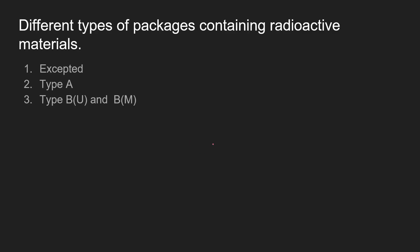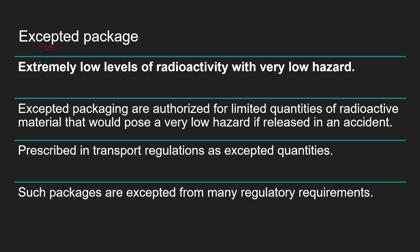There are different types of packages for radioactive materials: excepted packages, Type A packages, and Type B packages (which include Type BU and Type BM). An excepted package contains extremely low levels of radioactivity with very low hazard. Excepted packages are authorized for limited quantities that would pose very low hazard if released in an accident, and such packages are exempt from most regulatory requirements.